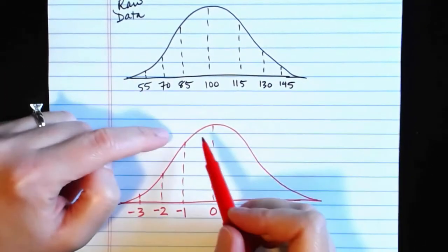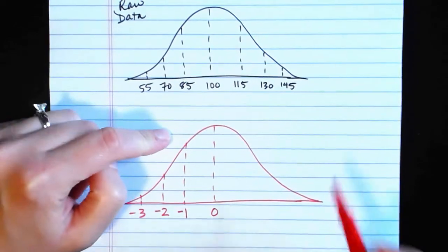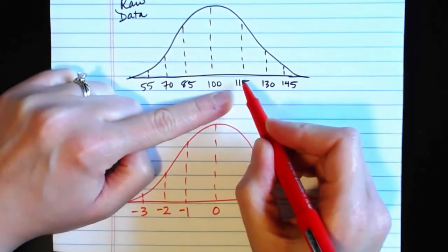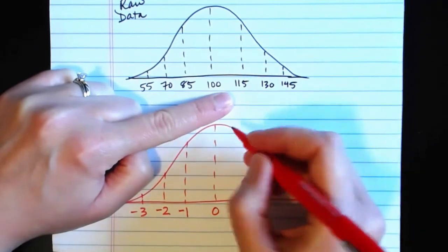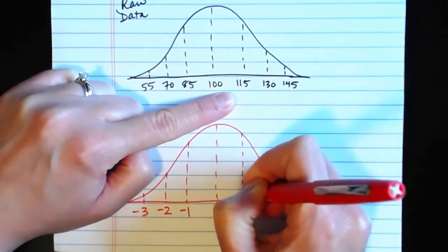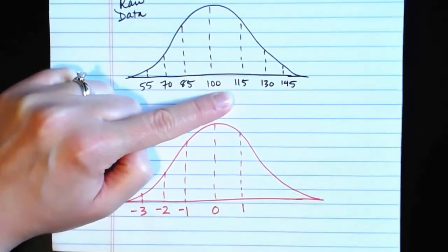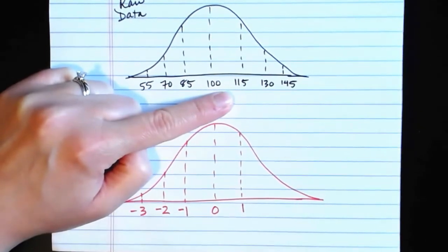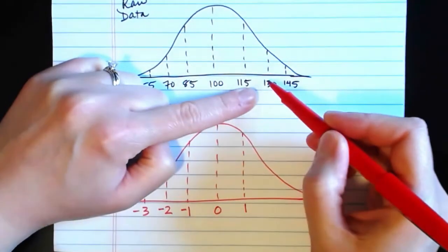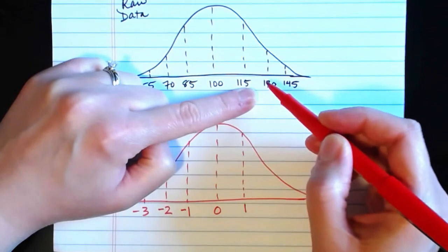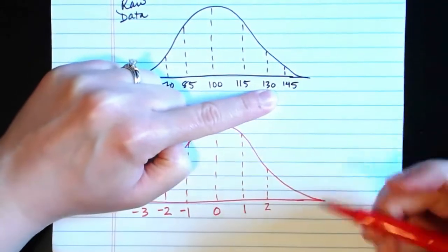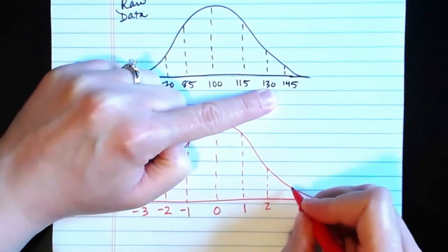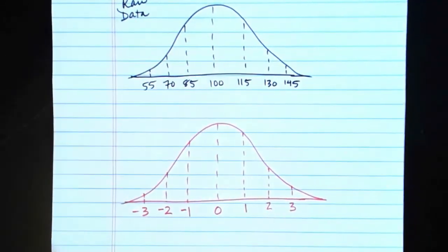And then we'll see the same pattern being symmetric on the other side. When we take our raw data value of 115 and subtract the mean of 100, we'll get a positive 15, divide by the standard deviation of 15, positive 1. Then 130 minus 100 would be 30, divide by 15, 2. 145 minus 100 is 45, divide by 15, 3.